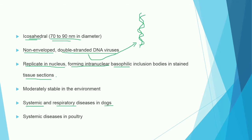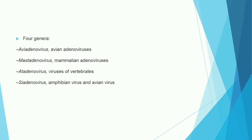Adenovirus produces systemic and respiratory disease in dogs, and systemic disease in poultry. Mainly the pathogenic strains affect dogs and poultry. In the classification of Adenovirus, the family Adenoviridae contains four genera.